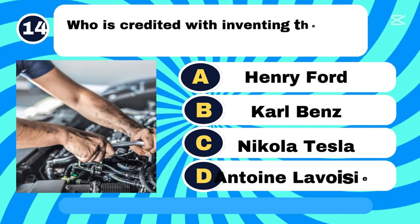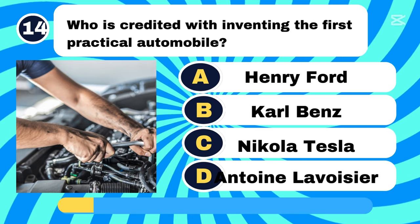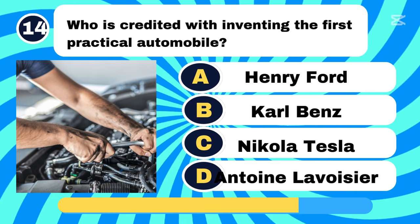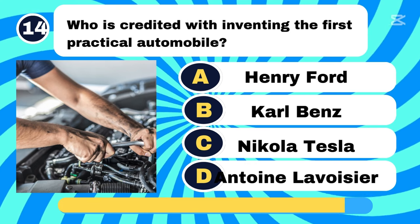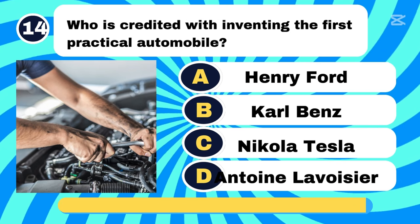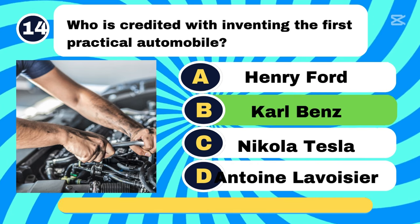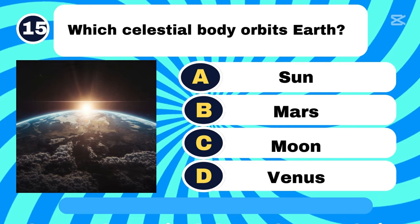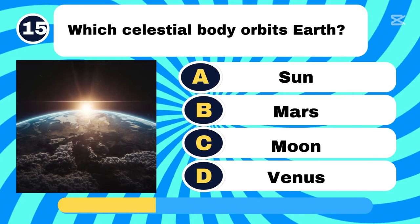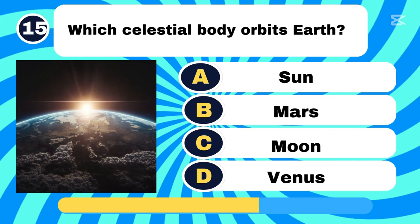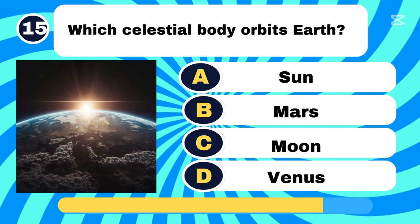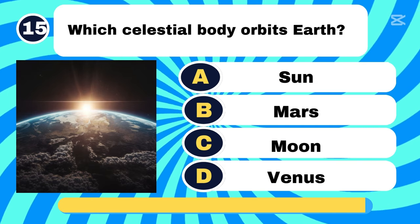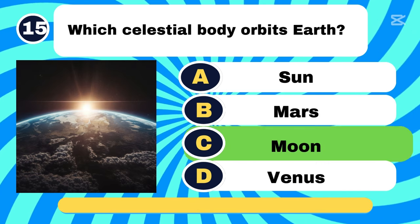Who is credited with inventing the first practical automobile? Letter B, Carl Benz. Which celestial body orbits the Earth? Letter B, Carl Benz.